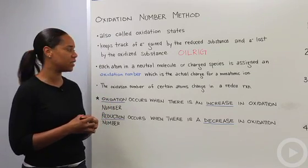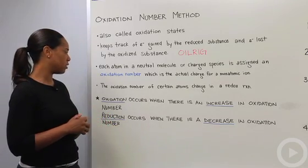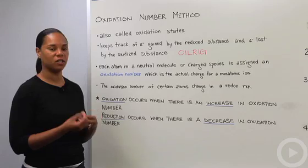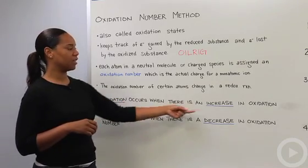The oxidation number of certain atoms will change in a redox reaction. That kind of makes sense because electrons are being transferred from one species to another.